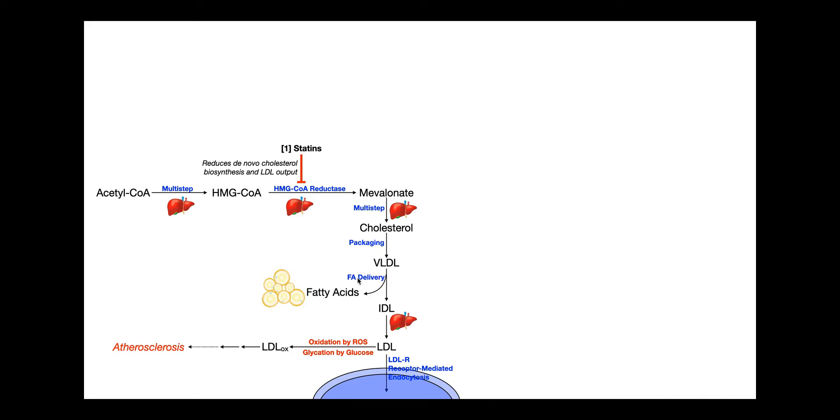Initially, the VLDLs will give up fatty acids to cells like adipocytes and skeletal muscle, any cell that needs fatty acids. And that transforms the VLDL into an intermediate-density lipoprotein, or an IDL. The IDLs return to the liver, where they're slightly modified into what's called an LDL. And the purpose of the LDL is to take cholesterol to peripheral tissues.